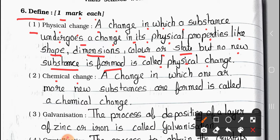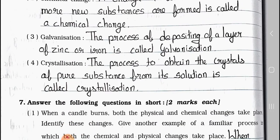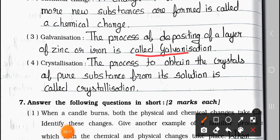Number 2: Chemical change. Answer: A change in which one or more new substances are formed is called a chemical change. Number 3: Galvanization. Answer: The process of depositing a layer of zinc on iron is called galvanization.